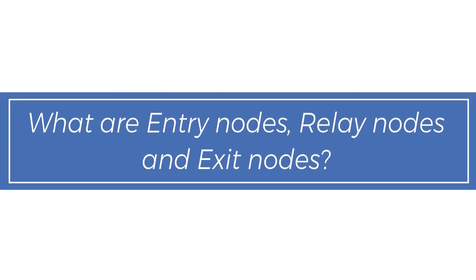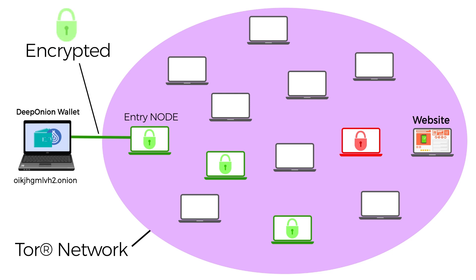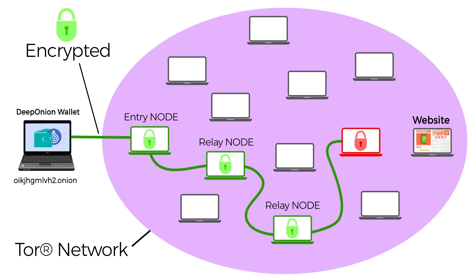What are entry nodes, relay nodes, and exit nodes? There are some different types of nodes. An entry node is your first connection to Tor. A relay node is a computer or smartphone that also uses the network — everyone can become a relay node if they are connected to Tor. An exit node is the final connection that is used.